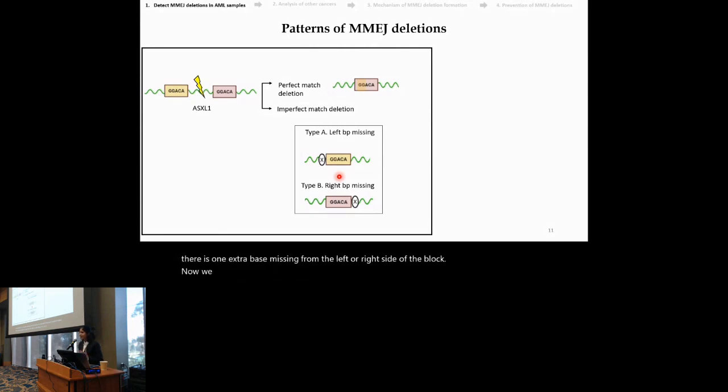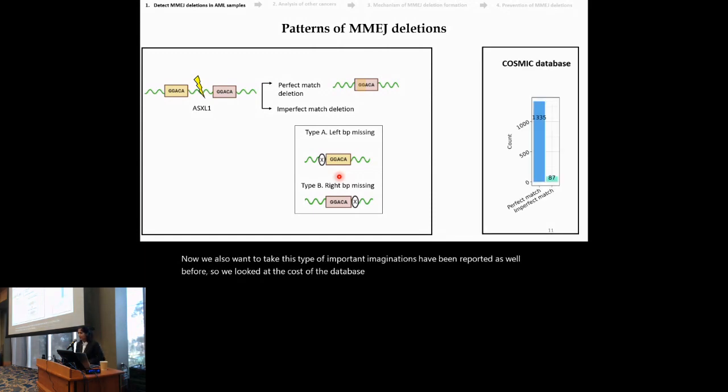Now, we also wanted to check if this type of imperfect match deletions have been reported elsewhere before. So, we looked at the COSMIC database, which is a database that reports all the somatic mutations in cancer. And what we saw was that, not only there are perfect match type of MMG deletions, but also the imperfect match type of deletions, although they occur at a much lower frequency.